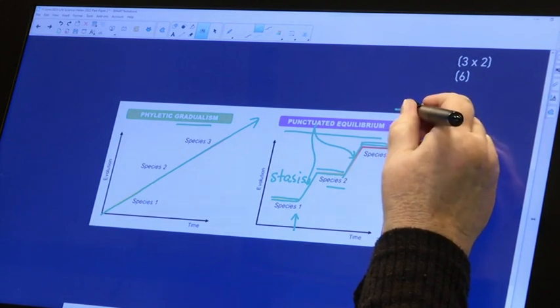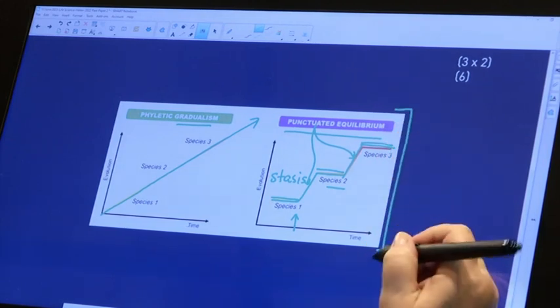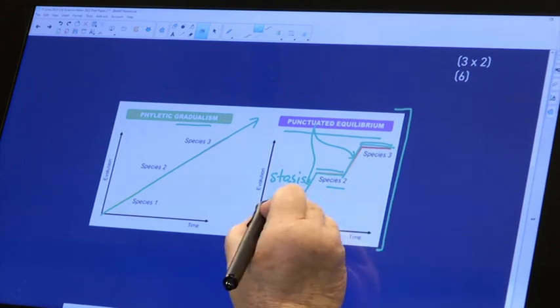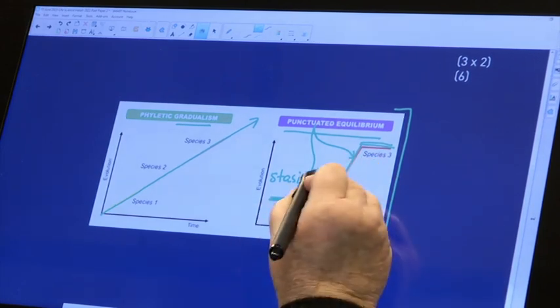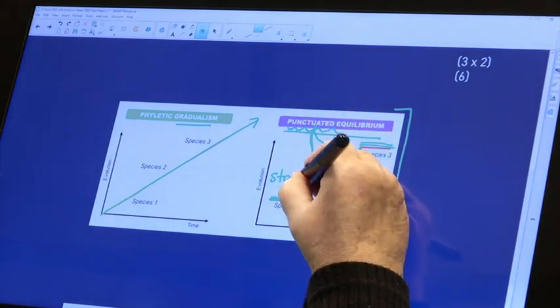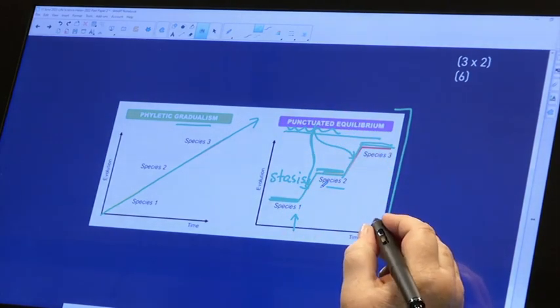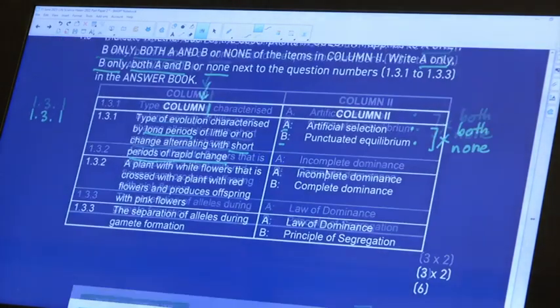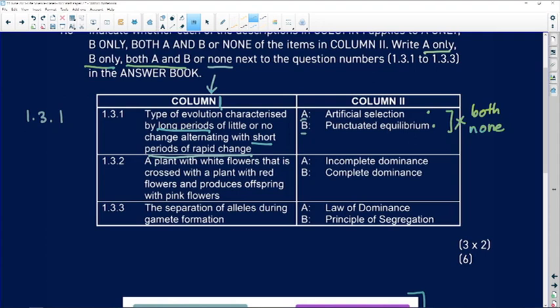This theory has been proposed by Niles Eldridge and Stephen Jay Gould and it explains periods of equilibrium punctuated or broken down like your comma in a sentence punctuates the sentence, and usually we see some kind of speciation happening.